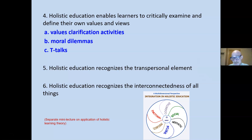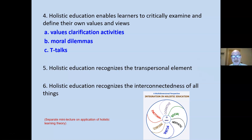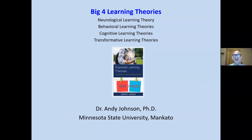A separate mini-lecture will specifically address the application of holistic learning theory. It may seem a little smoky, but it is quite concrete when you unpack each of the six elements. To summarize, the big four are: neurological learning theory, behavioral learning theories, cognitive learning theories, and transformational learning theory.